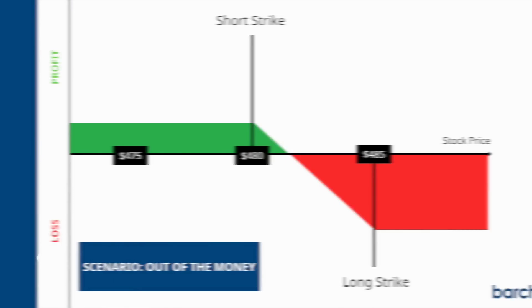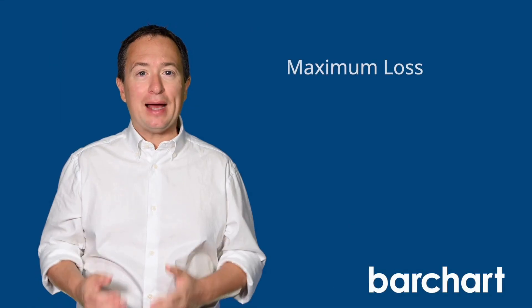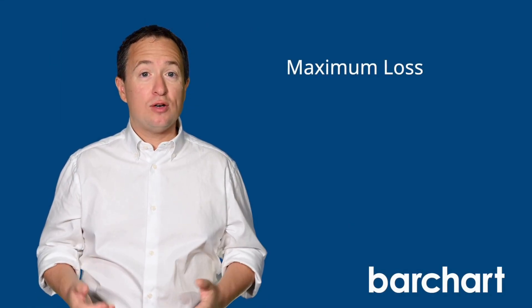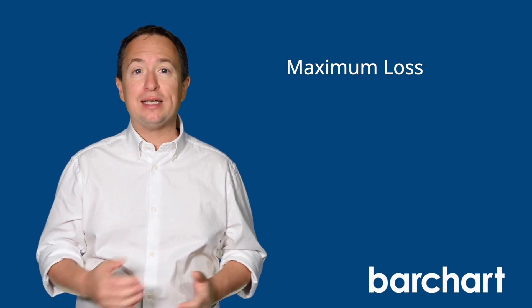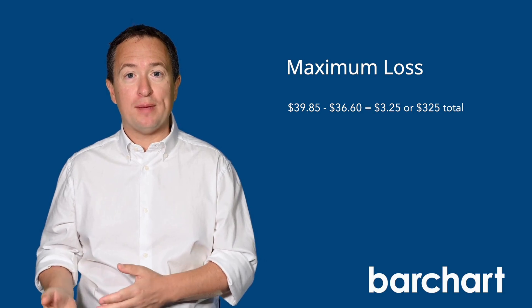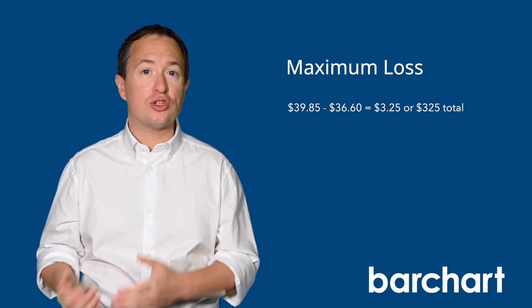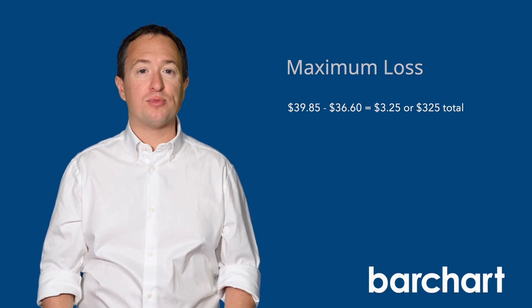On the other hand, if Meta trades above the long strike price at expiration — say $490 — you'll hit the maximum loss condition. The maximum loss is simply what you paid for the trade, or the net debit, calculated by subtracting the premium received from the premium paid. For this trade, that's $3.25, or $325 per contract.